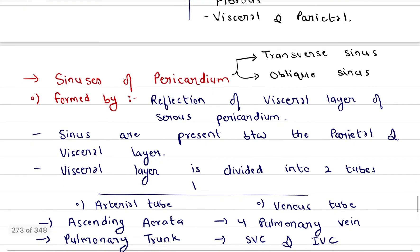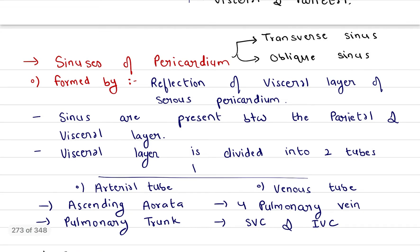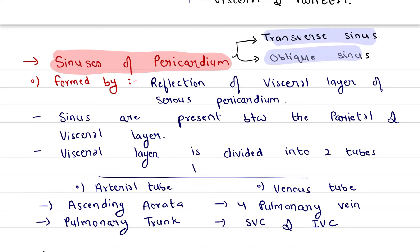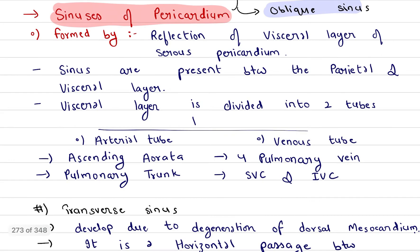Next is the sinuses of pericardium, which is a very important topic. There are mainly two sinuses: the transverse sinus and the oblique sinus. These sinuses are actually reflections of the visceral layer of the serous pericardium.